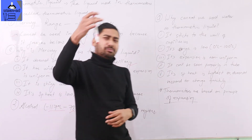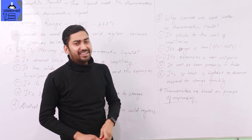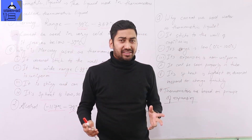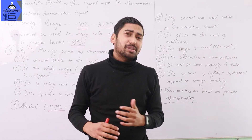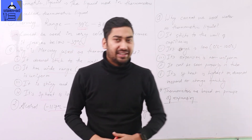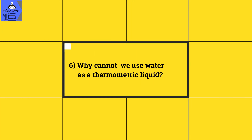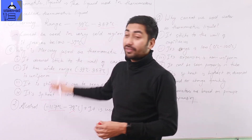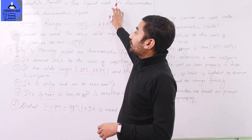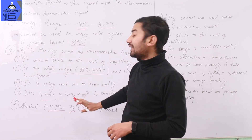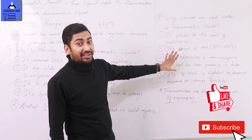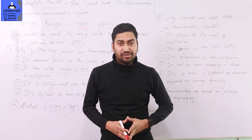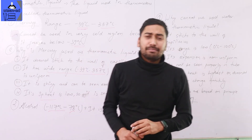Water can't be seen properly in the capillary tube either. So we generally use mercury and alcohol as thermometric liquids. Thermometers are based on the principle of expansion of liquids with heat. This is all about thermometric liquid — in the next class we will study different temperature scales.